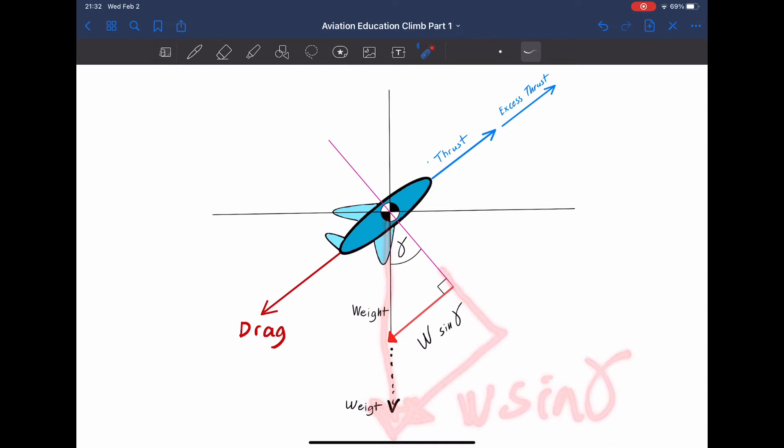In order to maintain a constant speed climb, the pilot is going to require excess thrust to offset the increase in weight apparent drag. Another option that a pilot has when he does not have a lot of excess thrust is to reduce the climb angle.